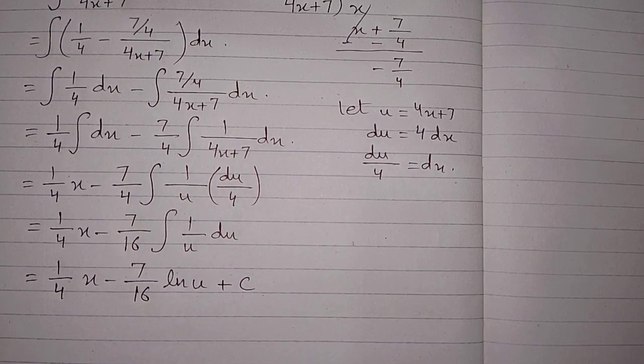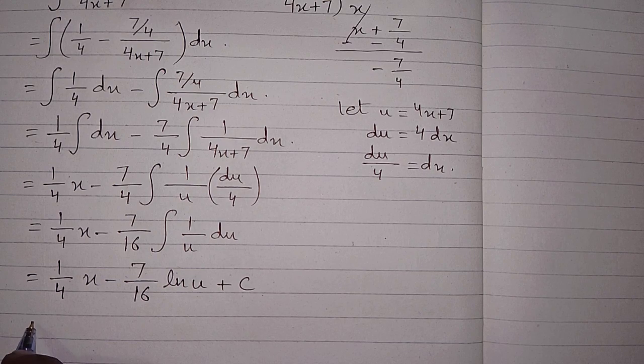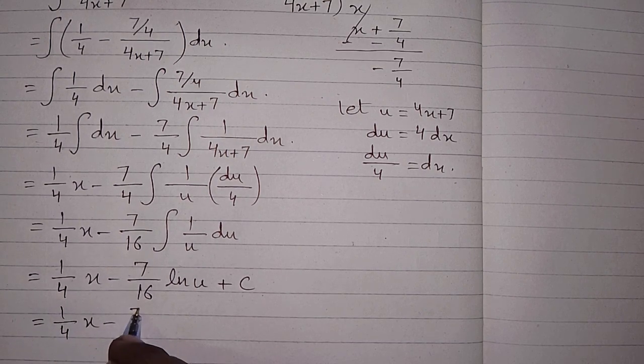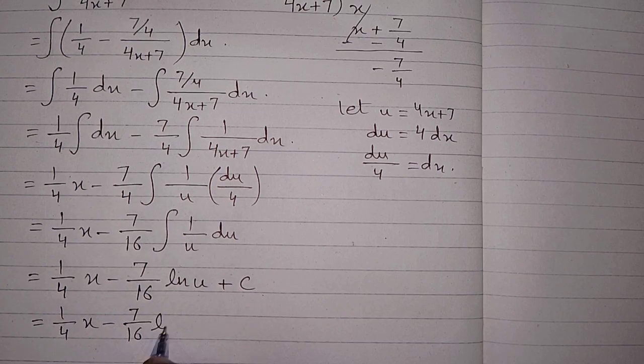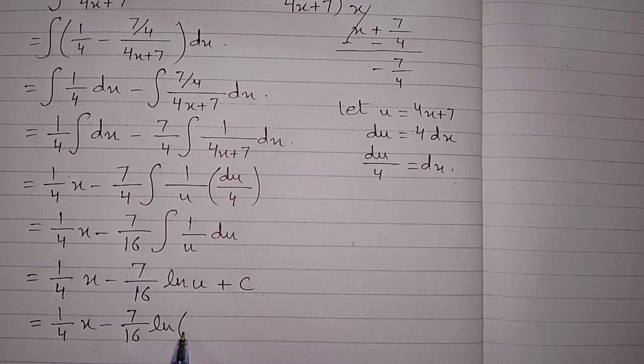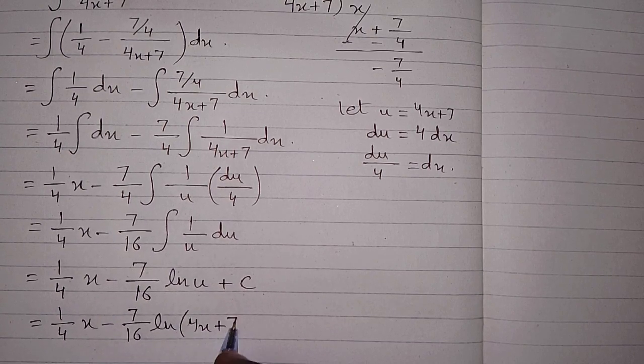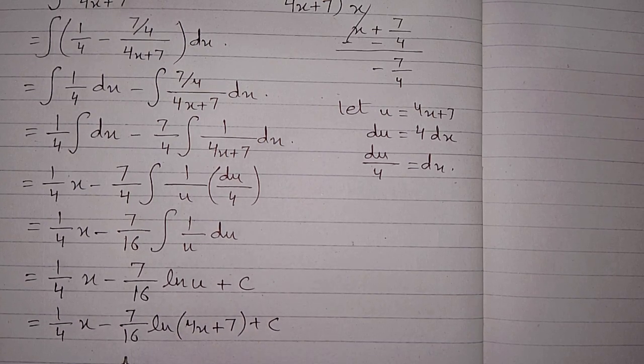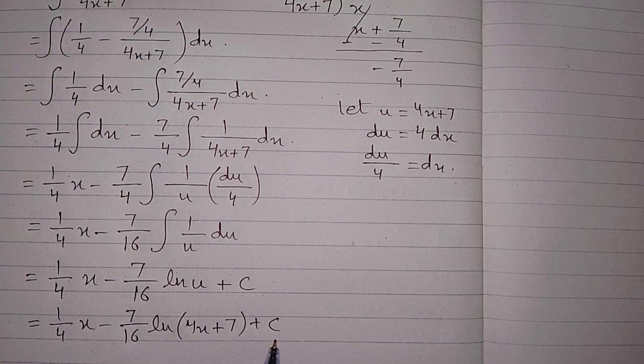Finally we can put the value of u, so the required answer is 1 upon 4 x minus 7 upon 16 ln of 4x plus 7 plus c. Thank you.